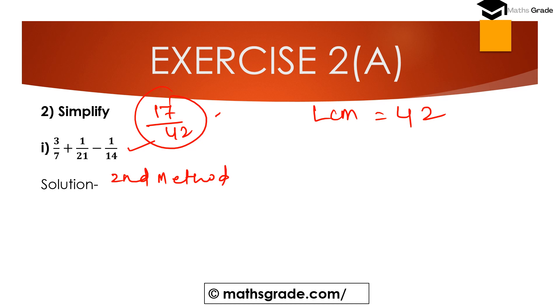So here 3 divided by 7 — the LCM is equal to 42.